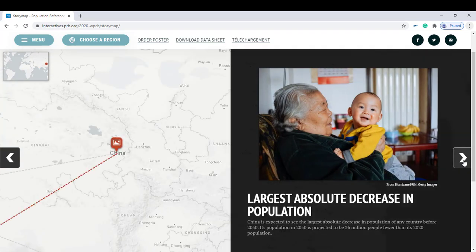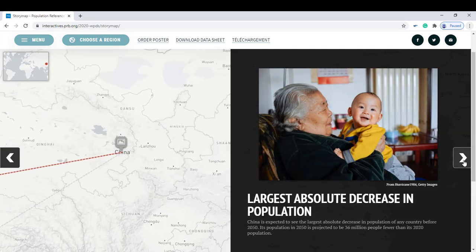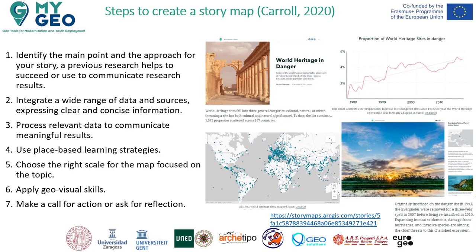The main steps to creating a story map are: 1. Identify the main point and approach for your story — previous research helps to succeed, or use it to communicate research results. 2. Integrate a wide range of data and sources, expressing clear and concise information.